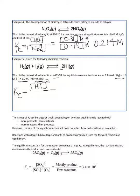Divided by the reactants, H2 and I2, each raised to the power of their coefficients. In this case the coefficients are both 1, and anything raised to the power of 1 is just itself, so H2 times I2.